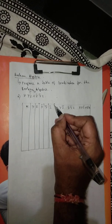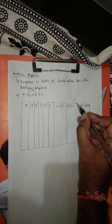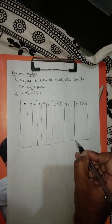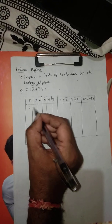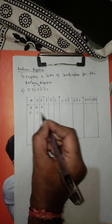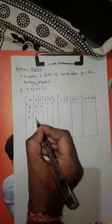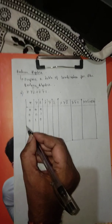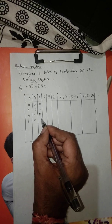I will prepare the table over here and draw a line. Now I need to write the combinations. Initially it starts with 0, 0, 0; then 0, 0, 1; then 0, 1, 0; and here it is 1, 0, 0.